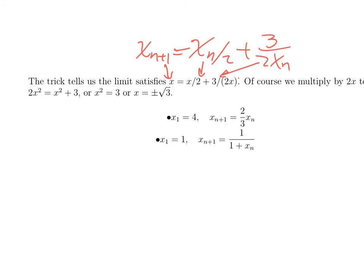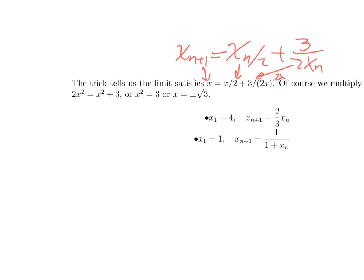Again, you multiply through by 2x and you get 2x² = x² + 3, so x² = 3, or x = ±√3. So the sequence, if it converges, converges to plus or minus the square root of 3. The example I gave you with x_1 = 1 in fact converges. Here are a couple more problems to try.